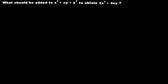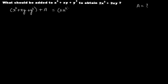What should be added to x squared plus xy plus y squared to obtain 2x squared plus 3xy? Let's suppose that we have to add an algebraic expression A. We don't know its value, so let's denote this expression with A. We will add A to x squared plus xy plus y squared to obtain 2x squared plus 3xy.